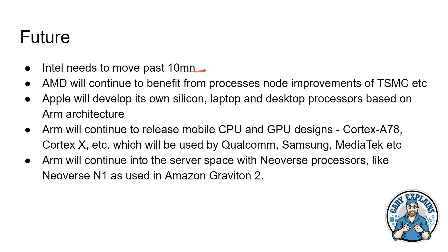What's the future? Intel needs to move past 10nm — Intel knows that, everybody knows that. They'll have to solve those problems themselves, and when they do it will breathe new life into Intel's product line. AMD will continue to benefit from new process nodes from TSMC. Apple will develop its own silicon for laptops, desktops, and smartphones based on the ARM architecture. ARM will continue to release mobile CPU and GPU designs like the Cortex-A78 and the Cortex-X, used by Qualcomm, Samsung, and MediaTek in our smartphones. And ARM will continue in the server space with its Neoverse processors like the Neoverse N1, used in the Amazon Graviton 2.